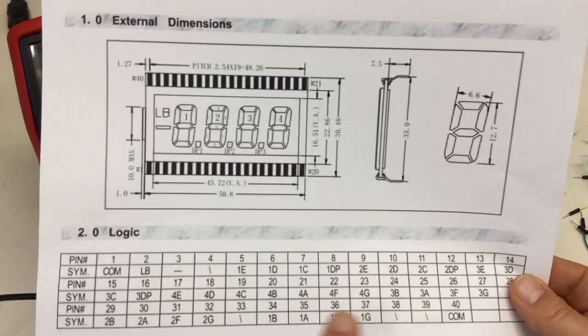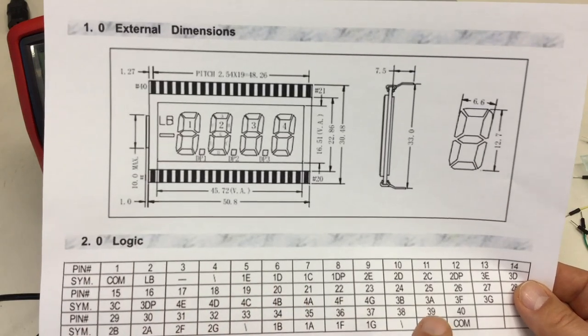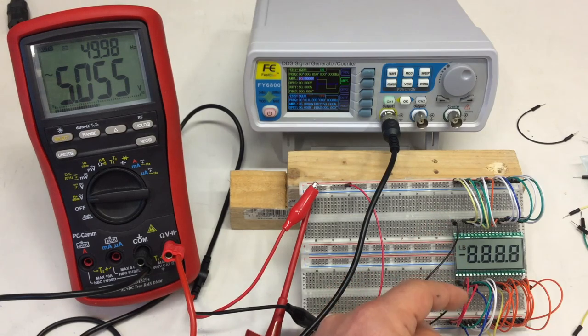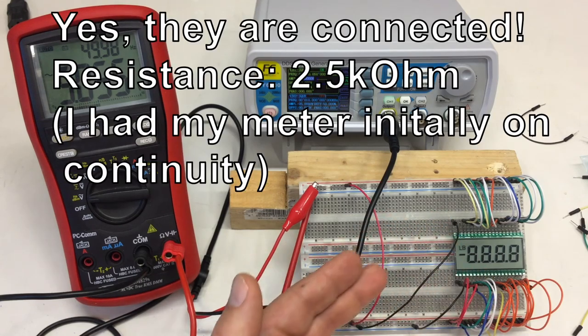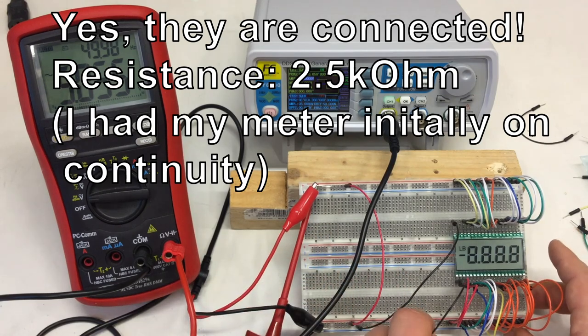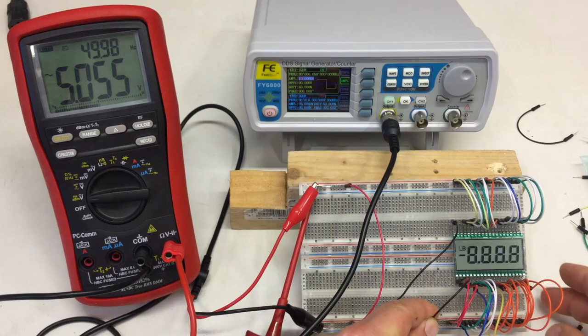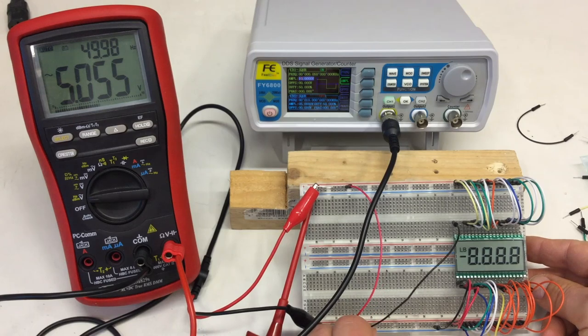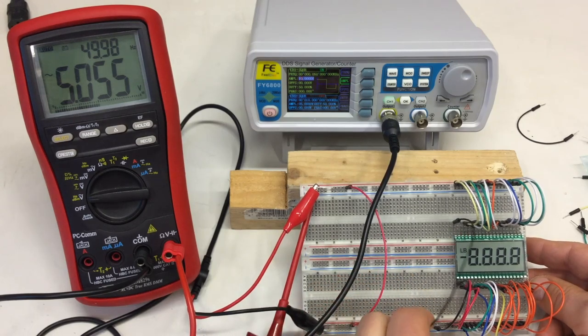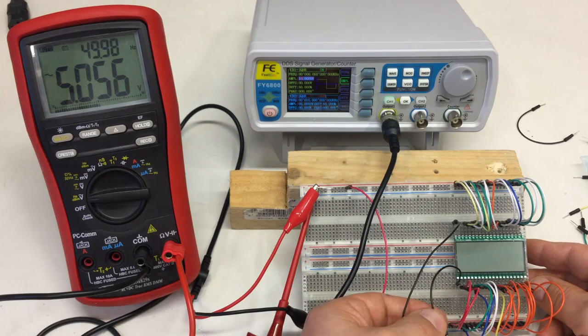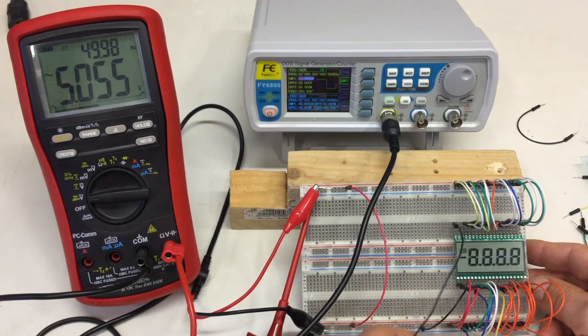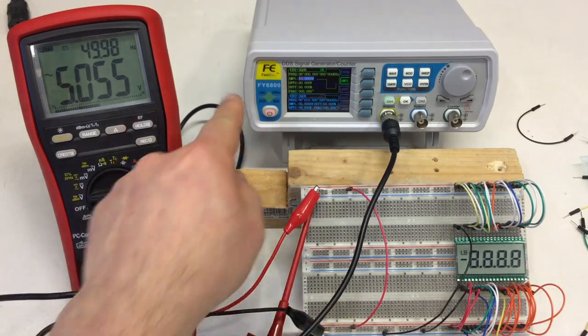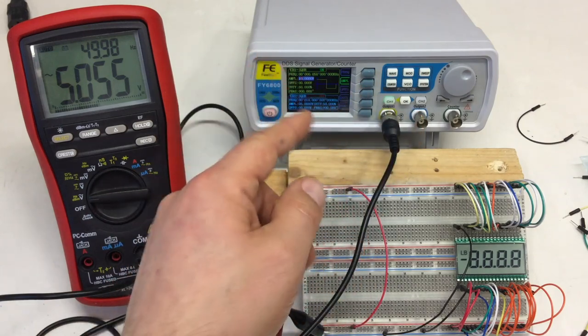First, note this thing has two common or backplane pins, and I measured them. If they are connected, they are very high impedance between them, and in fact you only need one of them for the display to work, which is very helpful if you do layout. I mean, you need at least one.